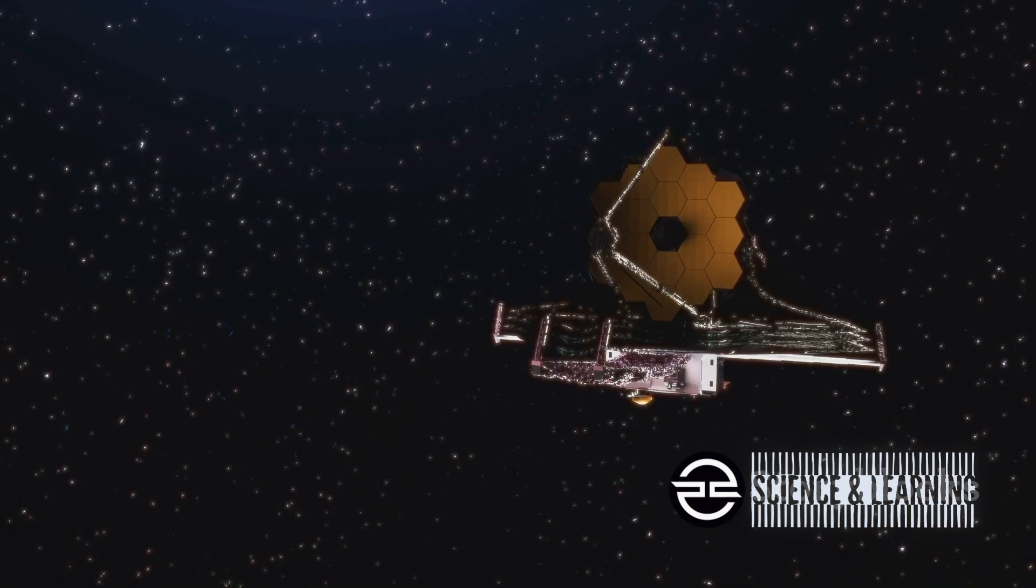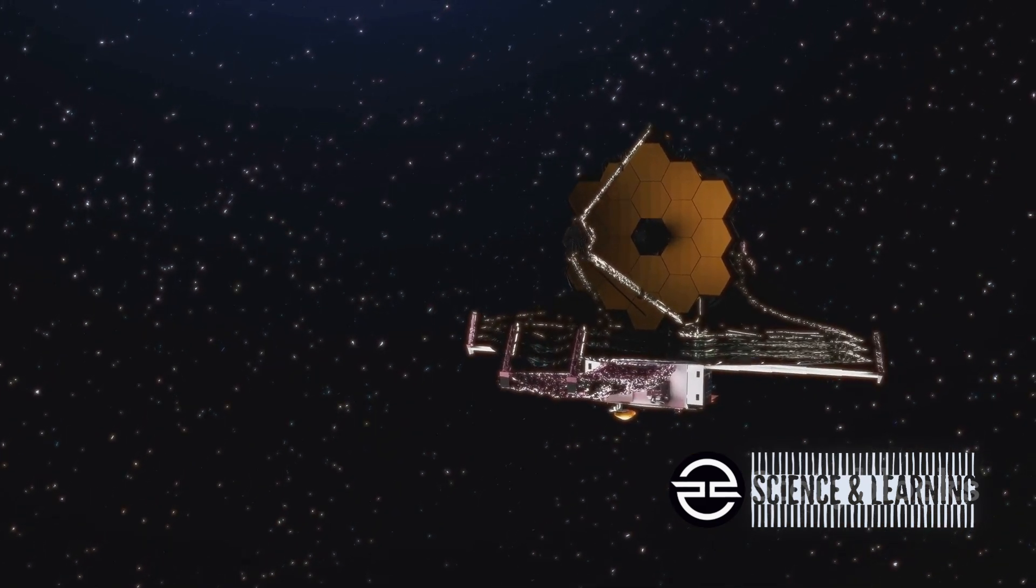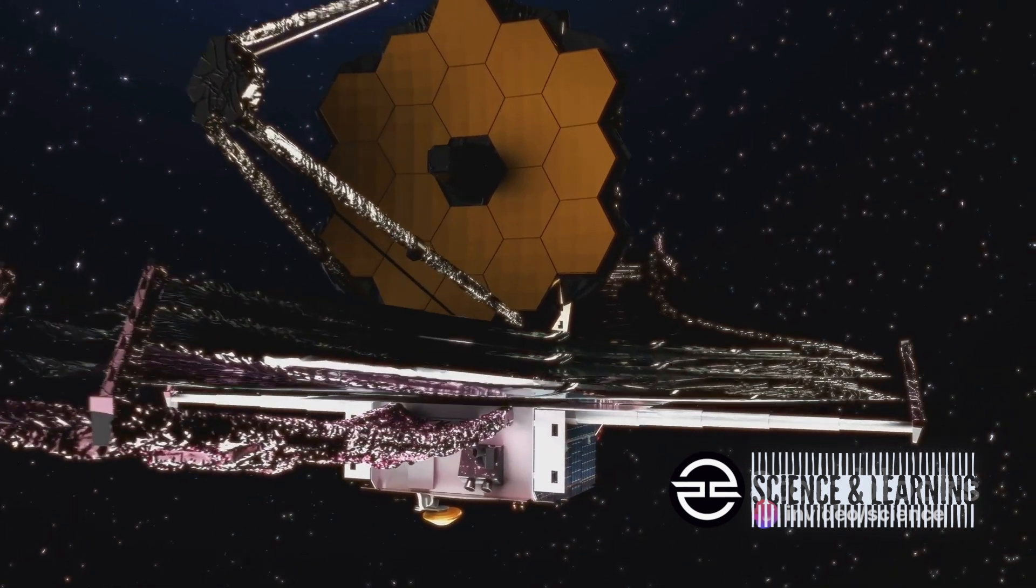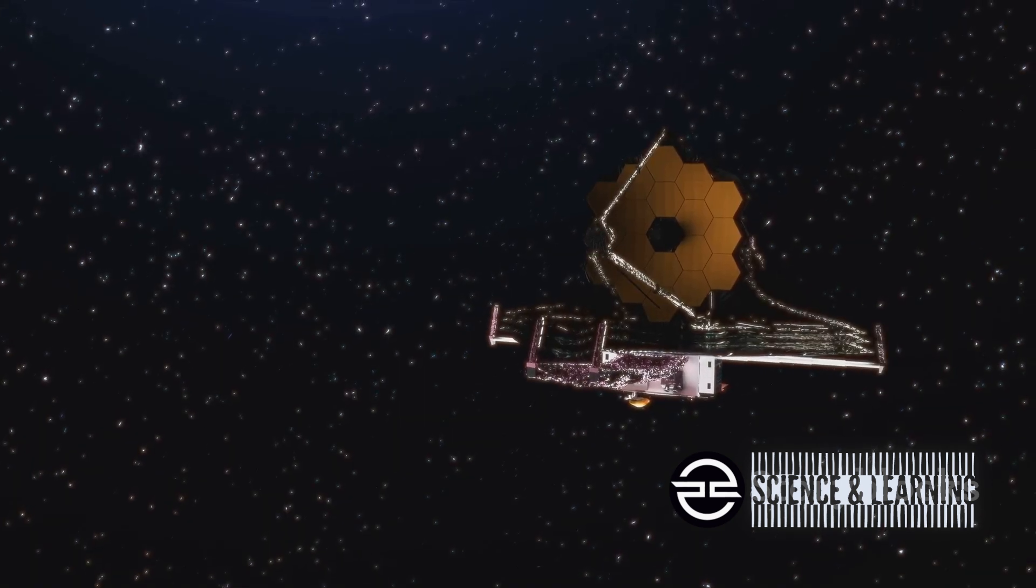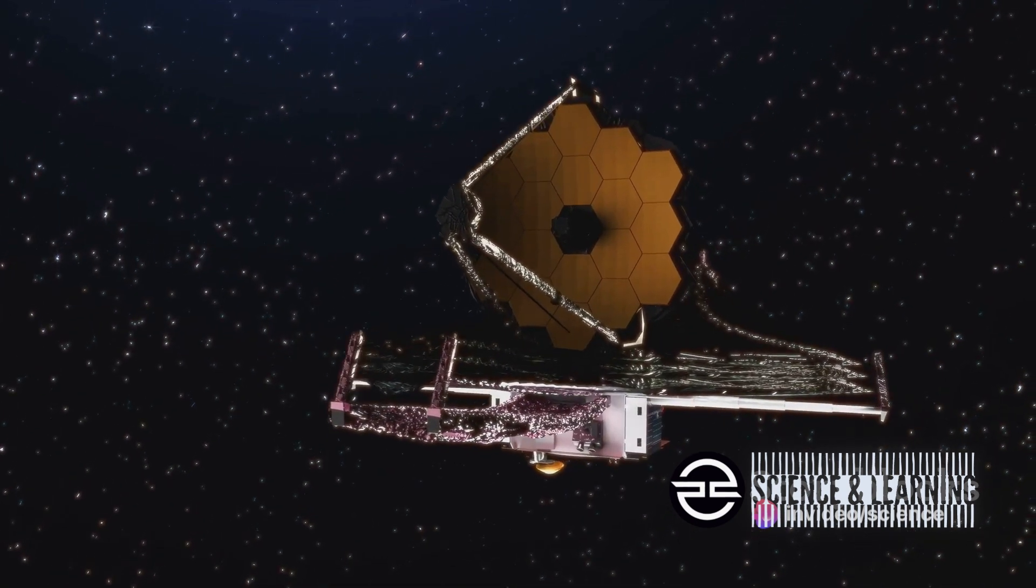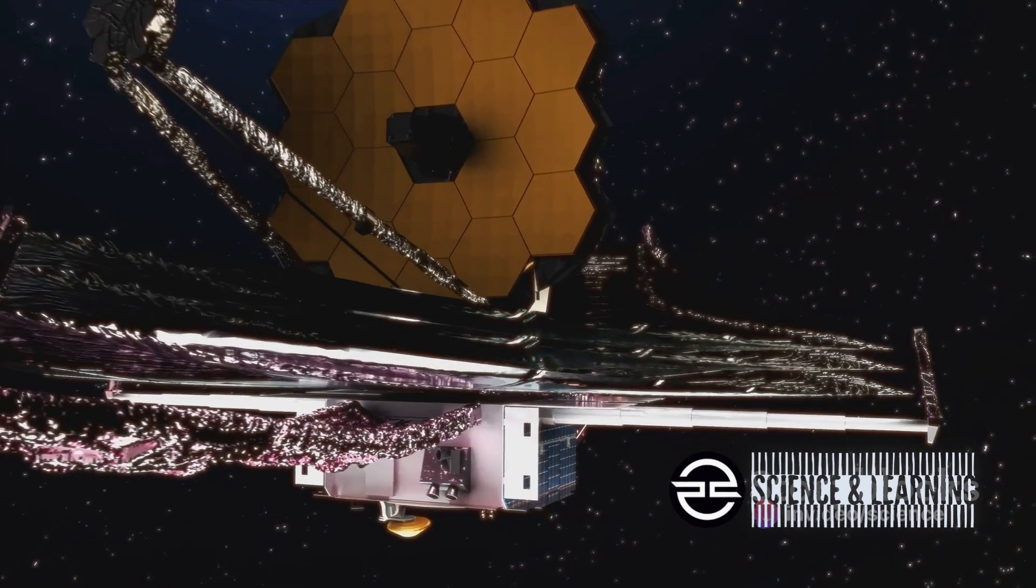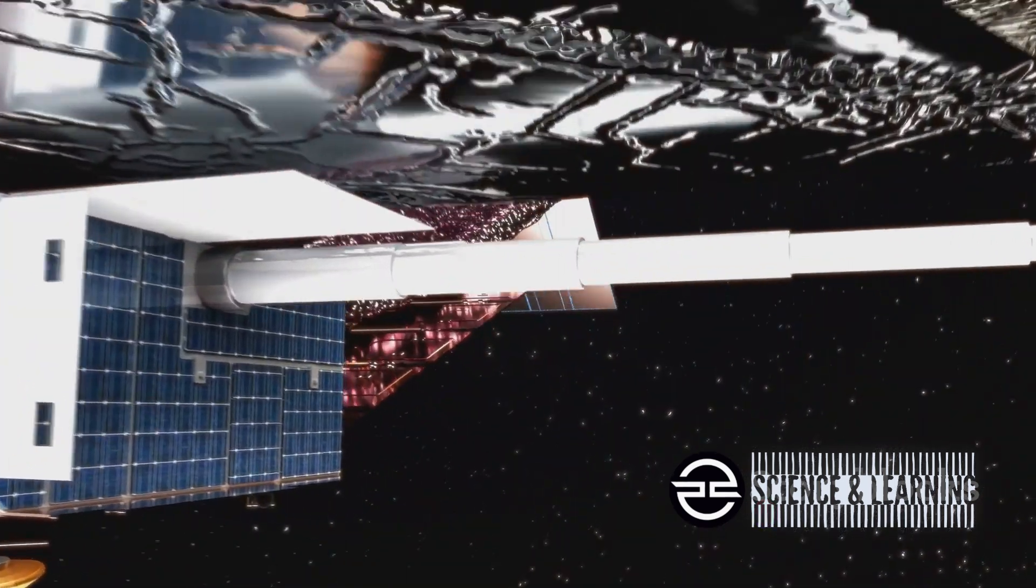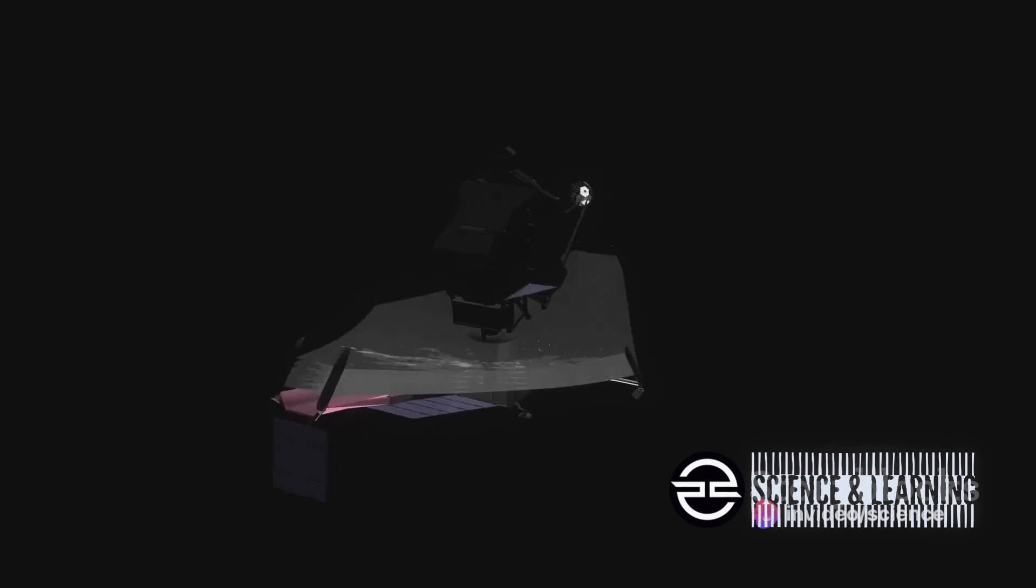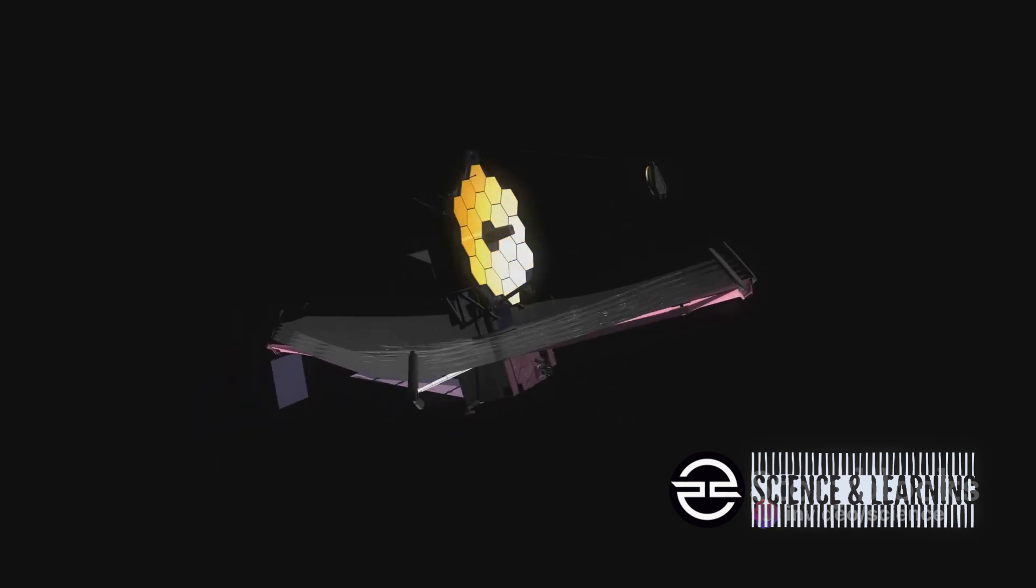The James Webb Space Telescope, or JWST, boasts an array of 18 mirror segments, each meticulously aligned to capture the most detailed images possible from the farthest reaches of space. It's a process that takes time and precision, but the results are worth it. The telescope's first targets were found in the Large Magellanic Cloud, a satellite galaxy of the Milky Way. The JWST is not just about capturing breathtaking images—it's about understanding the mysteries of the universe. With its powerful instruments, it can detect light across a wide spectrum, allowing us to study celestial bodies in unprecedented detail.